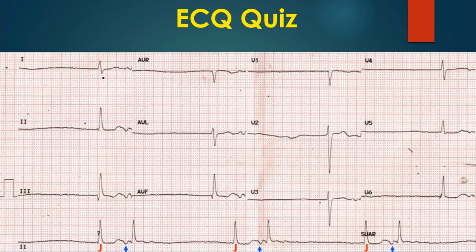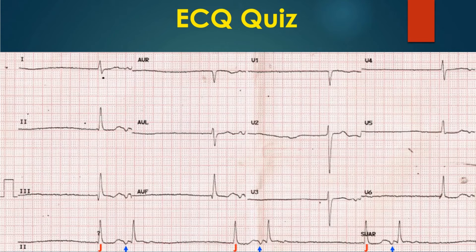Inverted p-waves preceding QRS complexes can be seen in high junctional rhythm, as conduction into the atria travels from below upwards, away from the positive electrodes of inferior leads. In low junctional rhythm, inverted p-waves occur after the QRS complex, as ventricular activation occurs before atrial activation. In mid junctional rhythm, p-waves are not visible as there is simultaneous activation of the ventricles and the atria, and p-waves are obscured by the QRS complex.